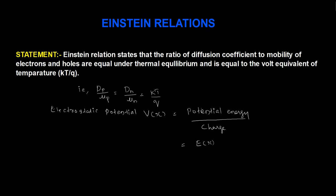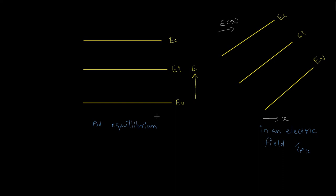If this is E of x, the potential energy is E of x. I have an intrinsic semiconductor material in the energy band diagram. This is the energy band diagram of an intrinsic semiconductor at equilibrium. In this case, we have an electric field applied to the energy band diagram.